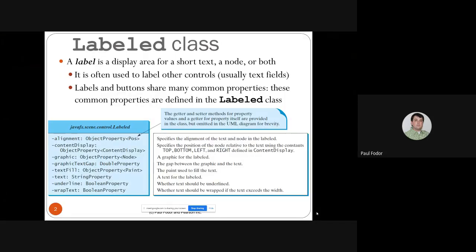First, a label. A label is a simple display of short text, either in a node or on the screen, or both. It's often used to label other controls, usually text fields. For instance, you have a label 'first name' and then next to it a text field where the user would enter the name. Also, a lot of components use labels.